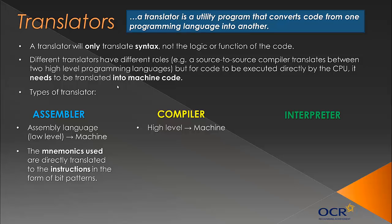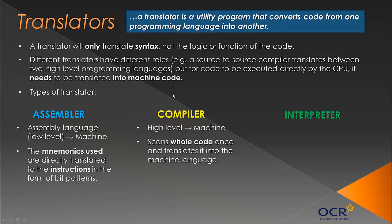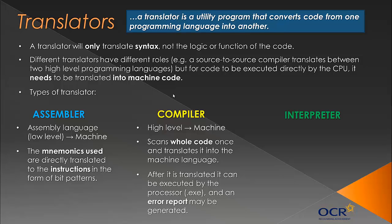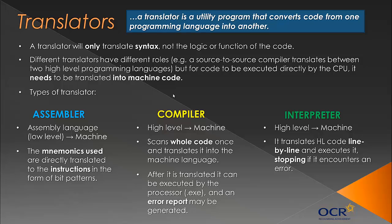A compiler translates high-level programming languages into machine code. The way it does this, it scans the whole code first and translates it all in one go into machine language. After it's translated, it can be executed by the processor. Compiled programs are usually stored as .exe files, and then an error report may be generated at the end. An interpreter also converts from high-level to machine code, but the difference is it translates code line by line, executing each line after it's translated, and stops if an error is encountered.